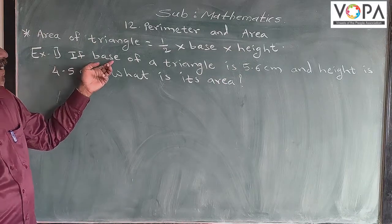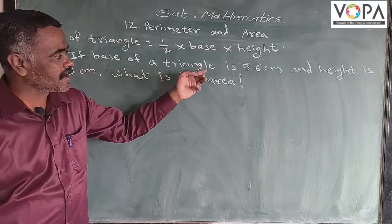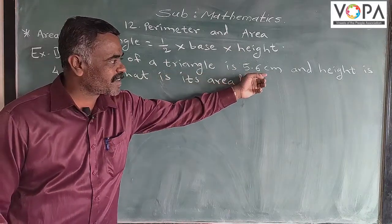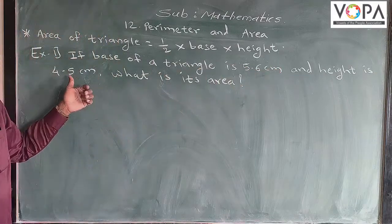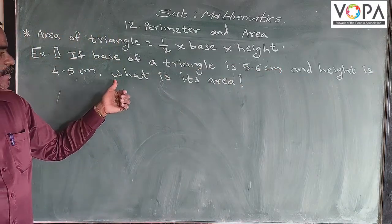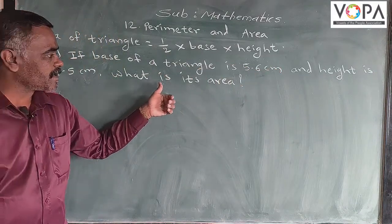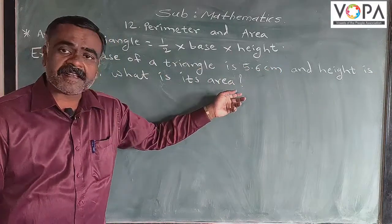If the base of a triangle is 5.6 cm and the height is 4.5 cm, what is its area?